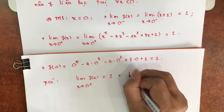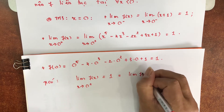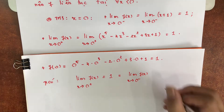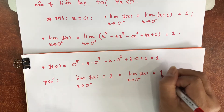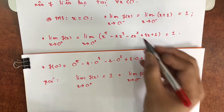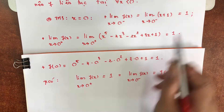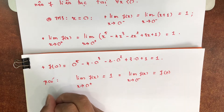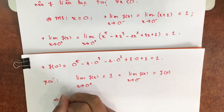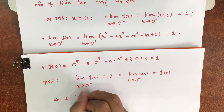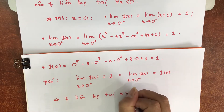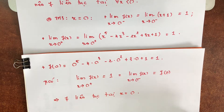Và như vậy nó cũng bằng giới hạn của F(x) khi x tiến về 0 trừ, và bằng F tại 0 luôn. Giới hạn F(x) khi x tiến về 0 trừ các anh chị thấy cũng bằng 1, và F tại 0 cũng bằng 1. Đẳng thức này xảy ra thì kéo theo hàm F liên tục tại x bằng 0. Hàm liên tục tại x bằng 0.